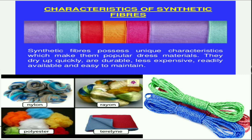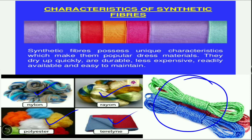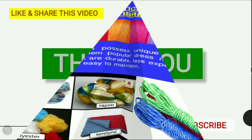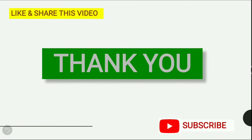Examples of synthetic fibers are nylon, rayon, polyester, and terylene. You can also see a rope here — previously a jute rope was shown, and this rope is made of synthetic fiber. That's all for today's class. Thank you.